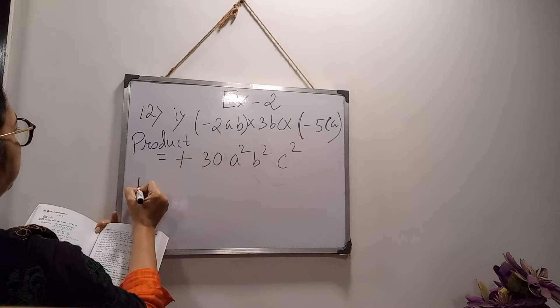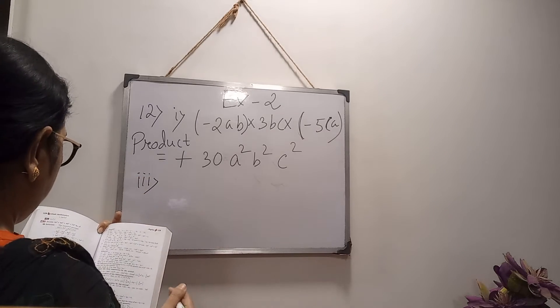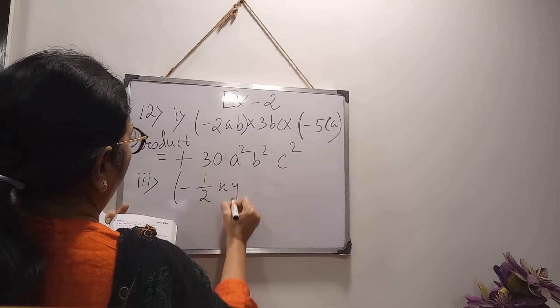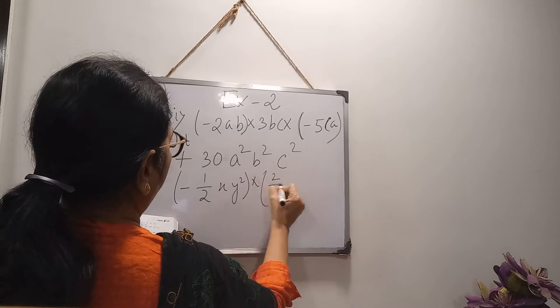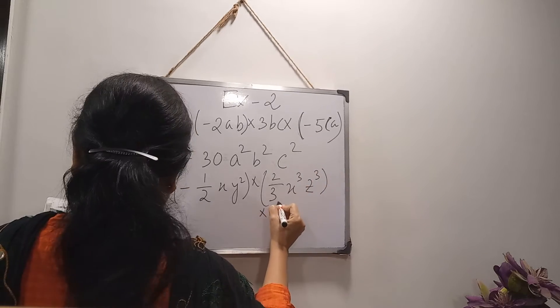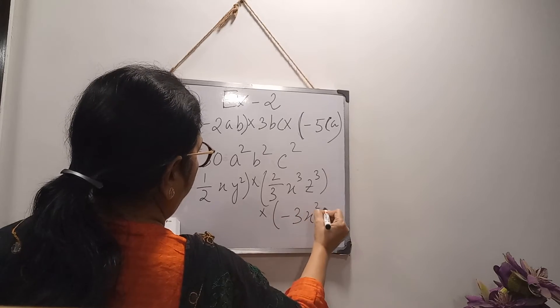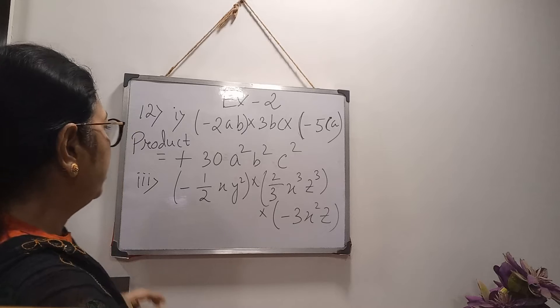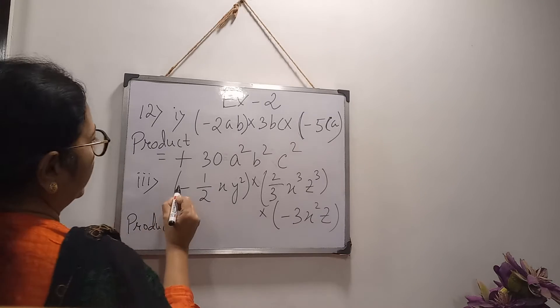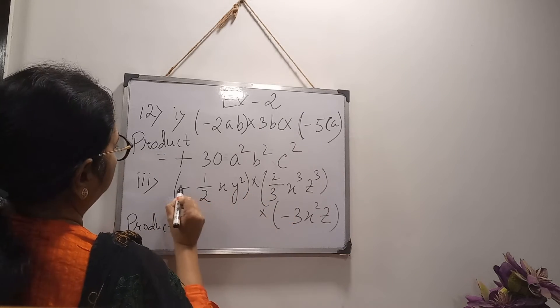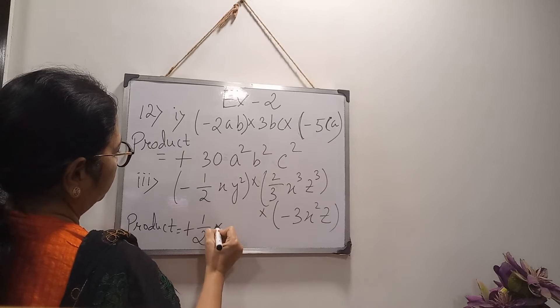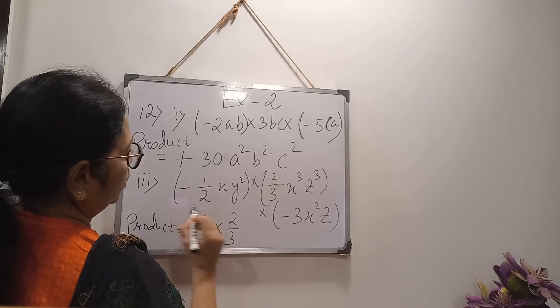Then number 3. There is fraction. Minus half XY square into 2 by 3 X cube Z cube into minus 3 X square Z. So here, product equals to. Now sign, minus plus minus, so minus plus minus, minus minus plus. Now, I am writing the numbers first together. As there is fraction, so separately write down, then you will do the calculation in third step.